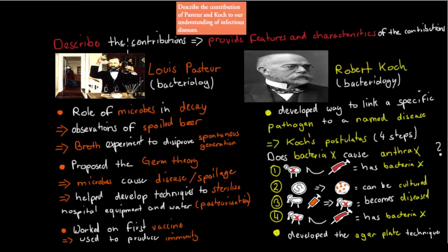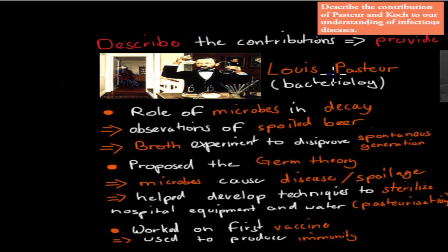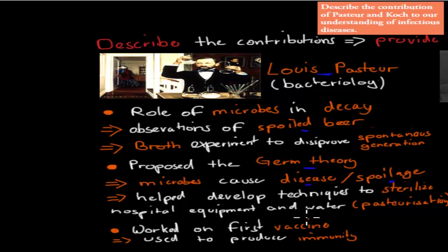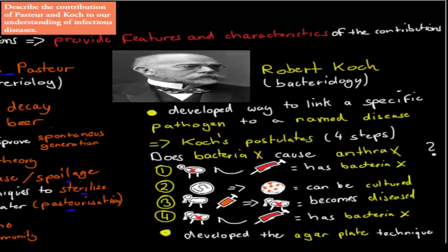First dot point is 'describe the contributions' — describe means provide features and characteristics of the contributions of Pasteur and Koch for understanding of infectious disease. Louis Pasteur found out the role of microbes in decay by observing spoiled beer, then did experiments to disprove spontaneous generation. This led to the germ theory, which said microbes cause disease and spoilage. He also developed sterilization techniques, the pasteurization technique to kill pathogens, and worked on early vaccines to produce immunity.